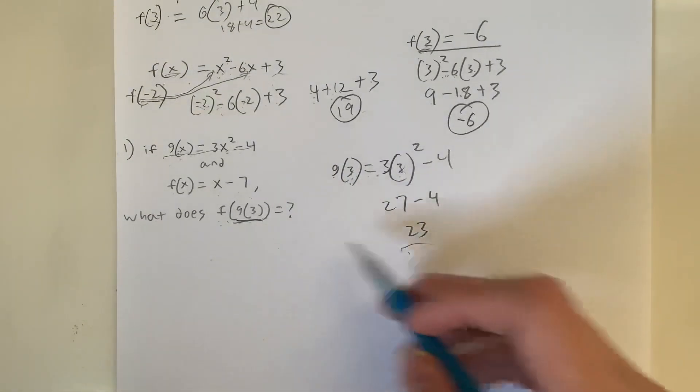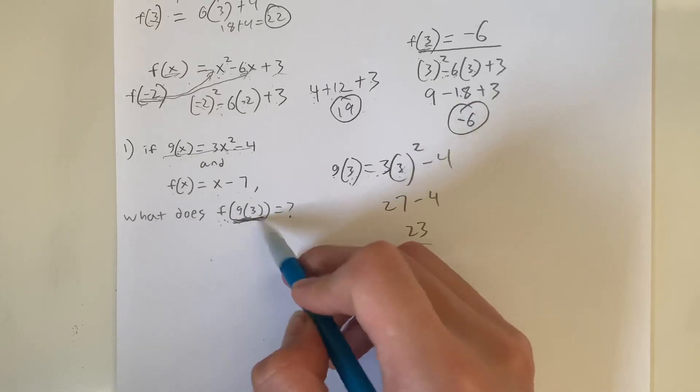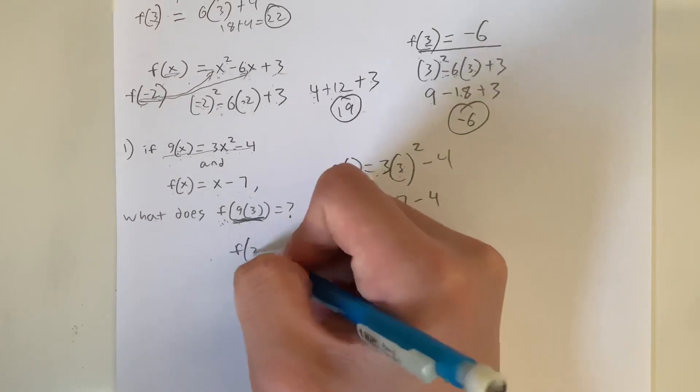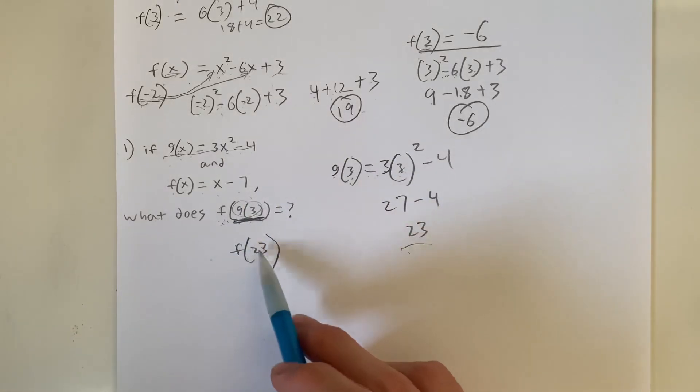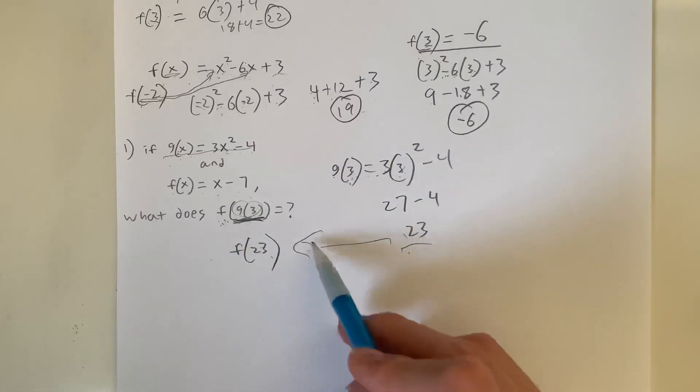Now what we do is we substitute that value in for g(3). So now we have to evaluate f(23). You see how once we evaluate the value inside, we evaluate that value. So that's how we got f of 23.